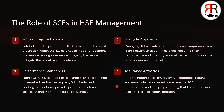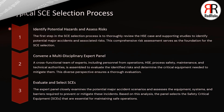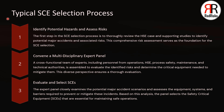The typical selection process for safety critical equipment includes the following steps. First, thoroughly review the HSE case and supporting studies to identify potential major accidents and associated risks. This comprehensive risk assessment serves as the foundation for the SCE selection. The next step is to convene a multi-disciplinary expert panel — a cross-functional team including personnel from operations, HSE, process safety, maintenance, and technical authorities — assembled to evaluate and identify risks and determine the critical equipment needed to mitigate them.